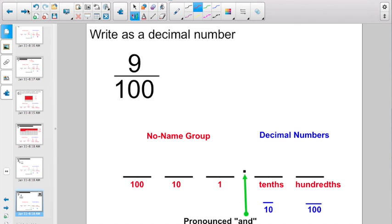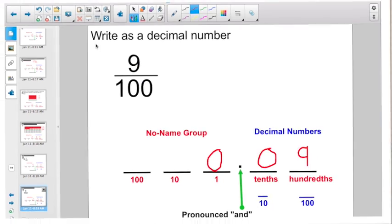How about this one? Write this as a decimal number. Here I have nine hundredths. A little bit trickier. The nine's going to go right here. But what do I need here in the tenth spot? You better have a zero. And since there is no whole number, just write a zero right here. This is pronounced nine hundredths.